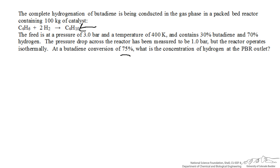To set up this problem, we're going to need to be able to express the concentration of component B. I'm going to label these components as A and B for our two reactants, A being butadiene and B being hydrogen, and so we're interested in the concentration of component B.